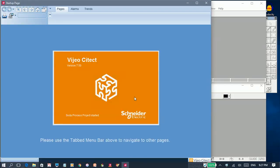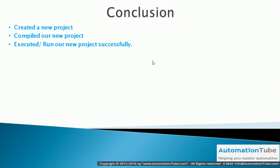I'm now ready to run this project. And there you have it — we've created a new project in Visual Cytic and have compiled the project successfully, and the project is now running. In conclusion, we've created a new project, compiled our new project error-free, and executed our new project successfully. Thank you for your time.